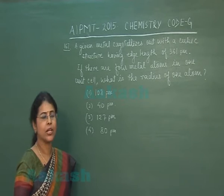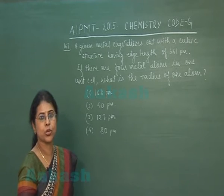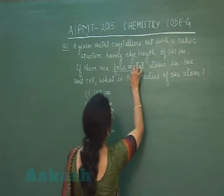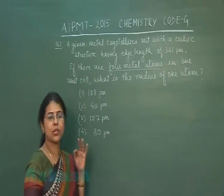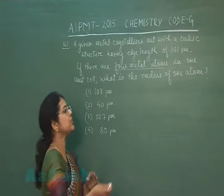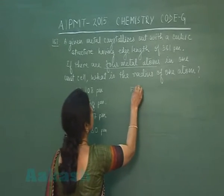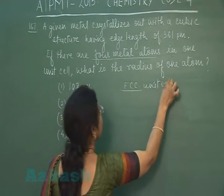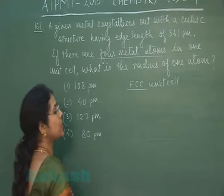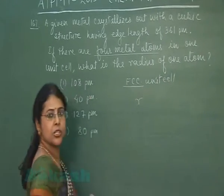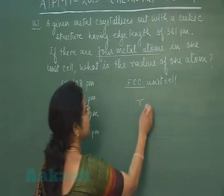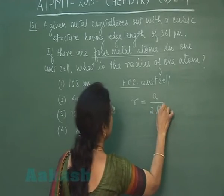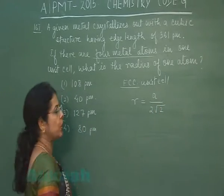This is a formula-based question. It is clearly mentioned that four metal atoms are present in one unit cell, which means this is an FCC unit cell. For such a unit cell, the relationship between radius and edge length is r = a / (2√2).